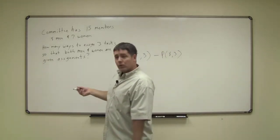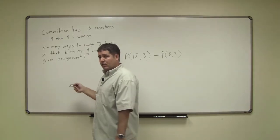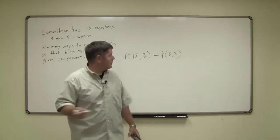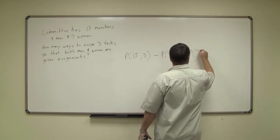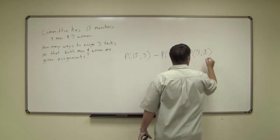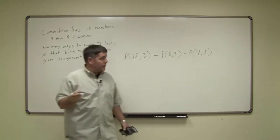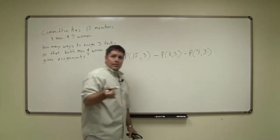Any other unfavorable results? Yes, another unfavorable result would be that you get all women. So we subtract this away. Permutation of seven available women, choose three. This gets us all women.